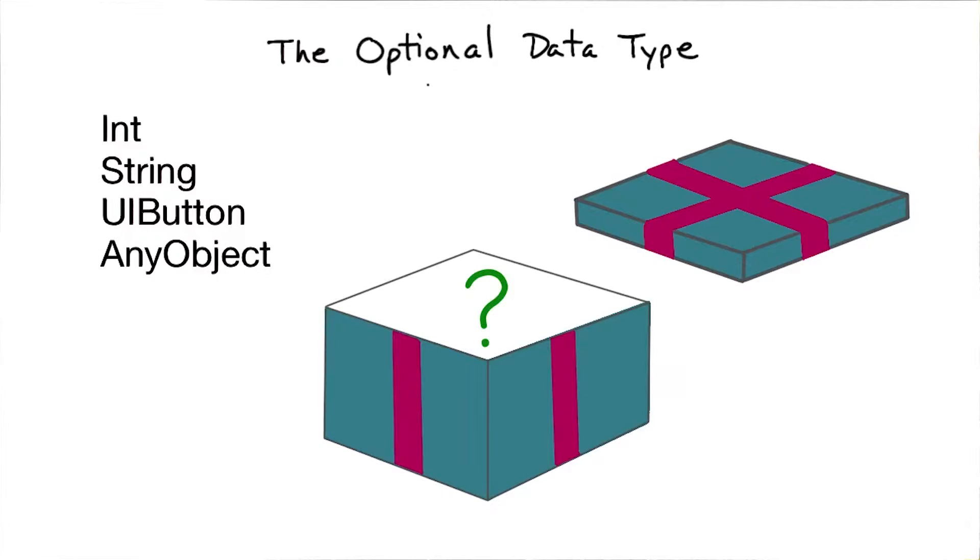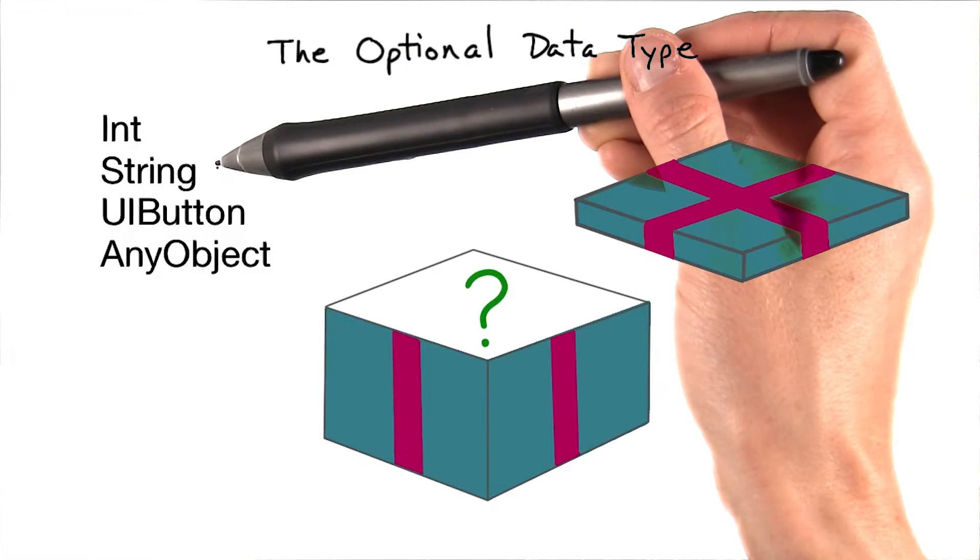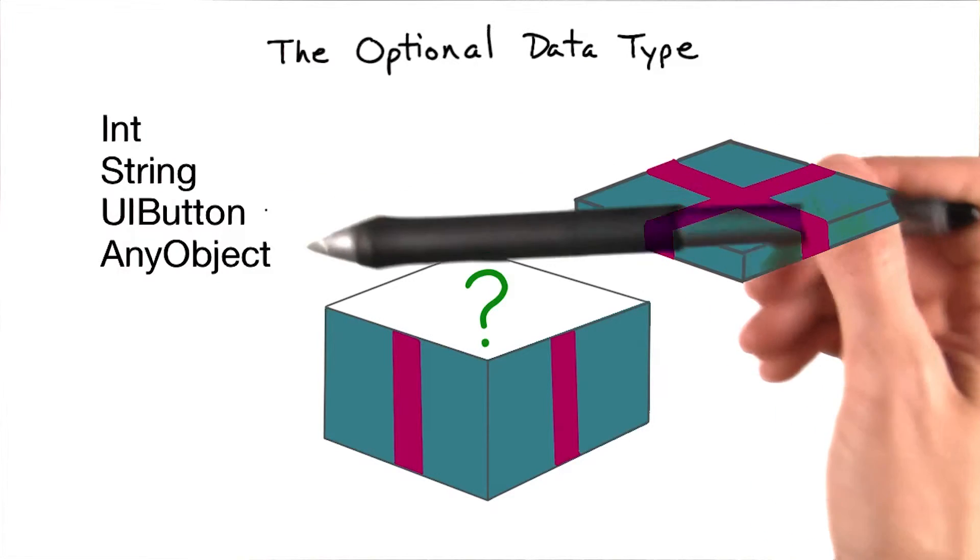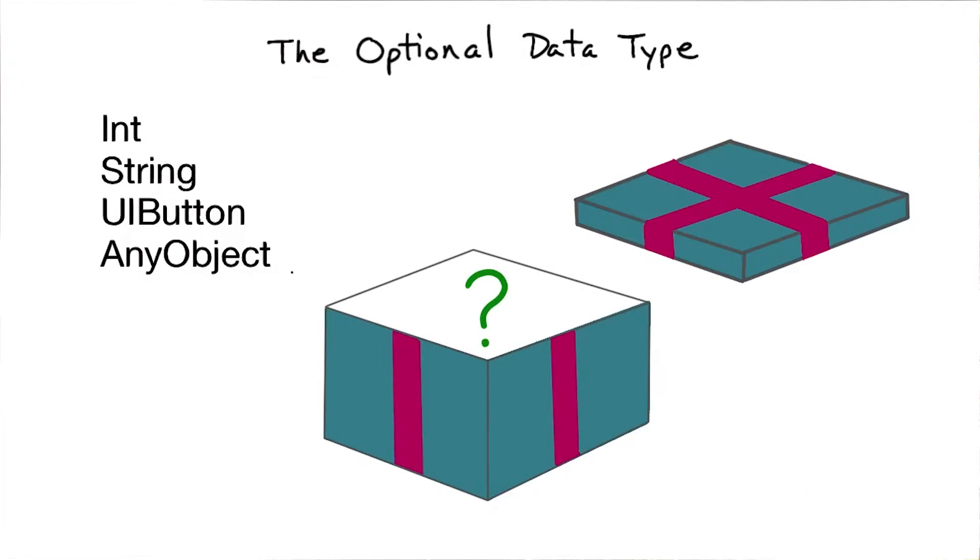Whenever you specify the optional data type, you also give the type of the value that might be inside. So we make a distinction between Int optionals and String optionals, UIButton optionals, and AnyObject optionals. But it's really only one generic data type, the optional.